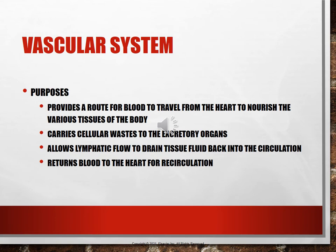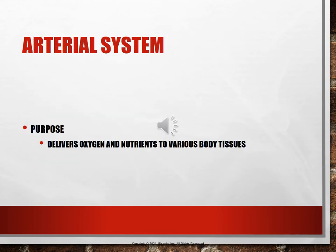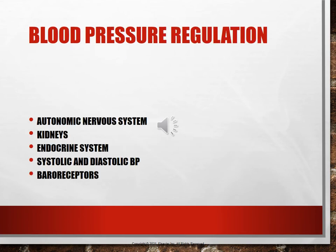The vascular system carries blood around the body. Blood travels from the heart to nourish the rest of the body, carries cellular waste to excretory organs, allows lymphatic flow to drain tissue fluid back into circulation, and returns blood to the heart for recirculation. The arterial system delivers oxygen and nutrients to various body organs and tissues, and blood pressure regulates blood flow.